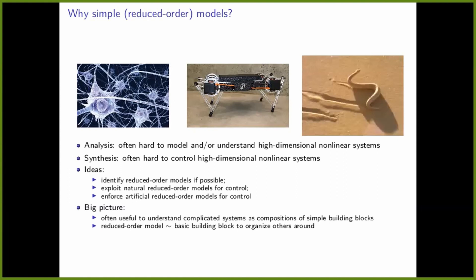I hope we can all agree that if you're analyzing in the wild or in the lab some very complicated high-dimensional system, or if you're trying to control some very high degree of freedom system like a robot, it would be easier if those systems were lower-dimensional. So one idea is to identify a reduced order model when possible.